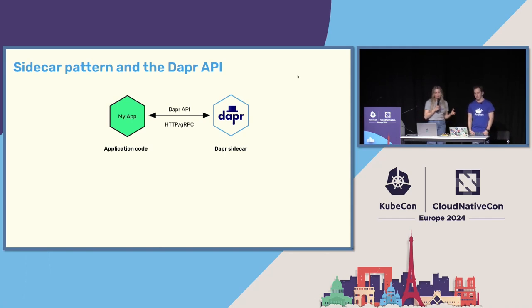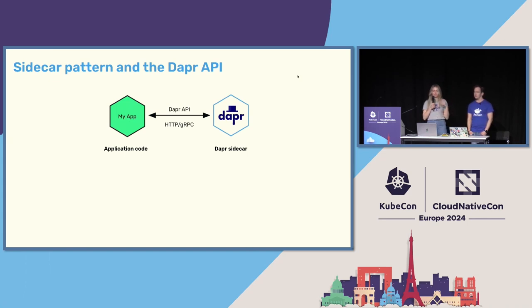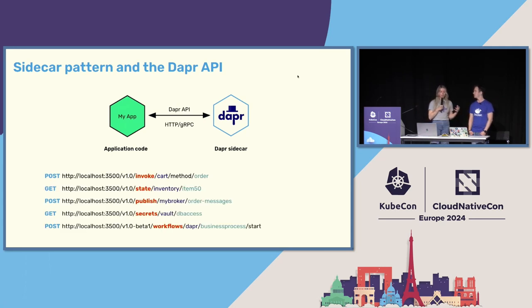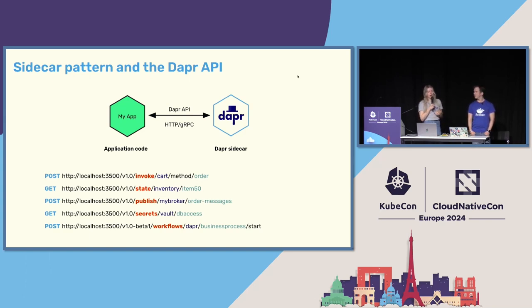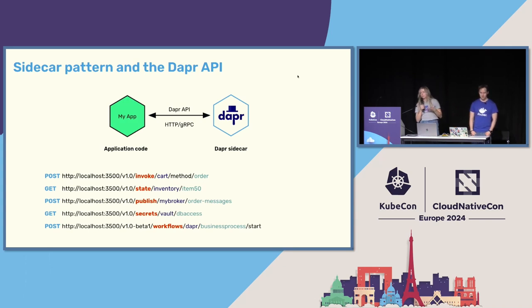Dapr typically runs as a sidecar pattern, with your application code reaching out over localhost to these APIs — your choice whether HTTP or gRPC. You can see on the side here we have this localhost endpoint exposing our Dapr sidecar. This is my service invocation endpoint where I am invoking another service via the Dapr API, or maybe publishing a message on my message broker — all things you might want to do while building a typical distributed system.